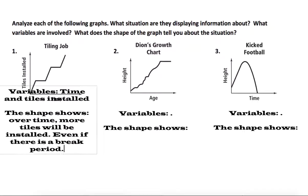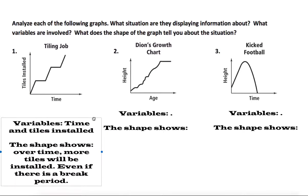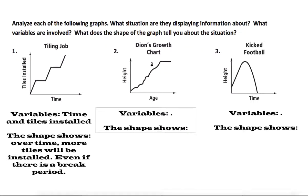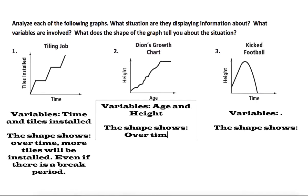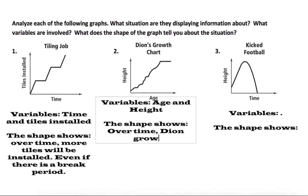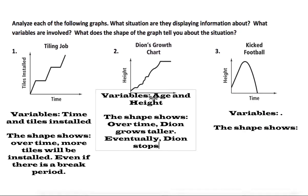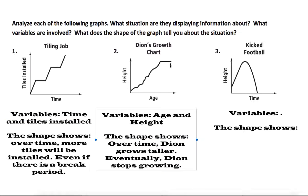Seen here, Dion's growth chart. Ideally over time, as Dion gets older and older and older, his height's going to grow up and up and up, but eventually level out. So the variables here are age and height. Shape shows that over time Dion grows taller, eventually Dion stops growing, which is represented from this flat line up here at the top.